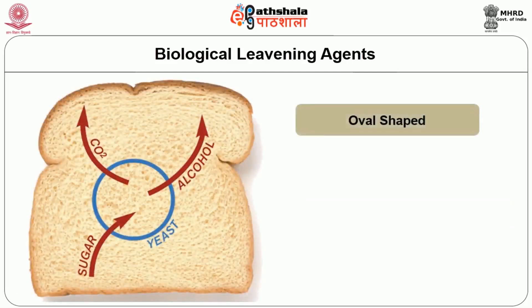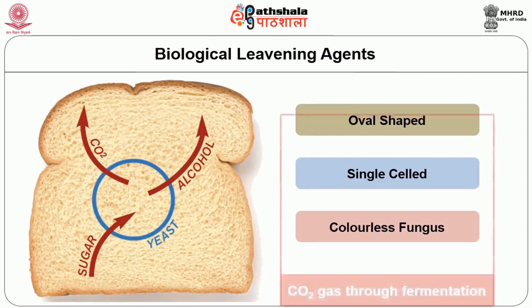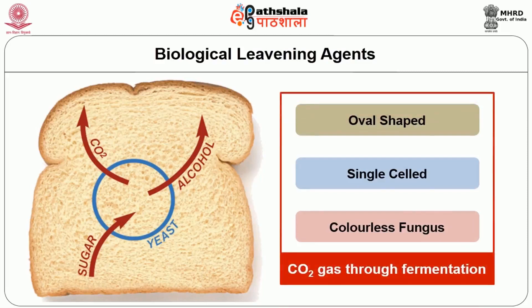Yeast is an oval-shaped, single-cell, colorless fungus that produces carbon dioxide gas through fermentation. It is active in air as well as in the absence of air. It grows rapidly in the presence of air but produces more alcohol in the absence of air. It is universally distributed, generally growing harmlessly on various plant parts wherever sugar is available.